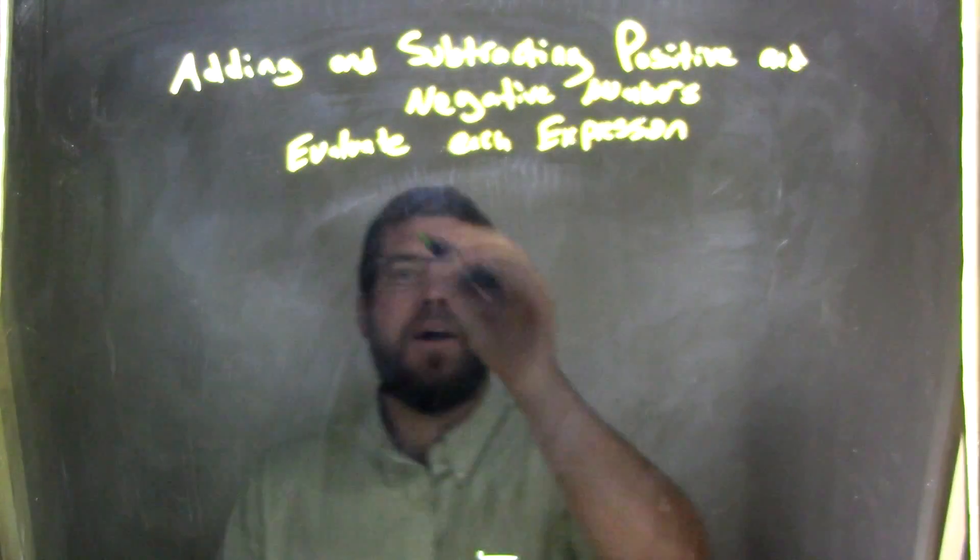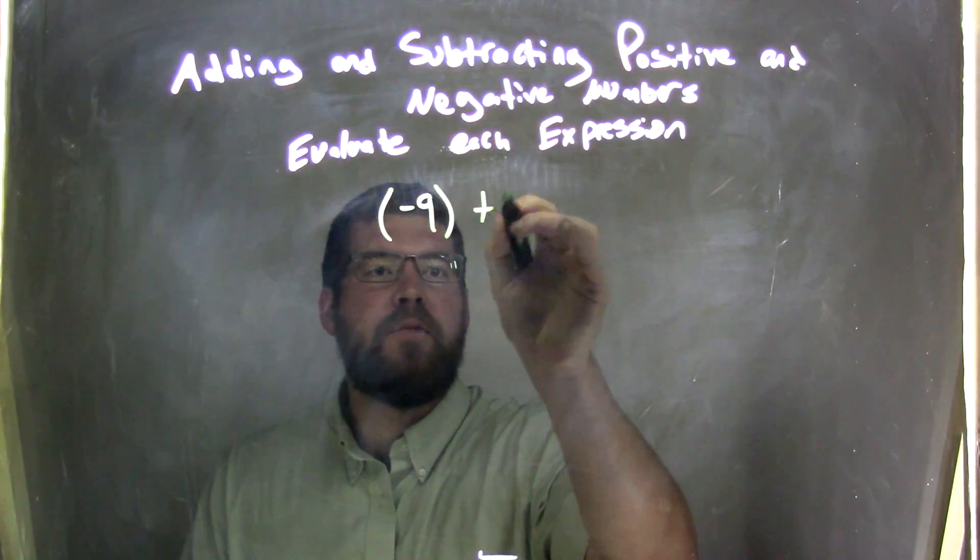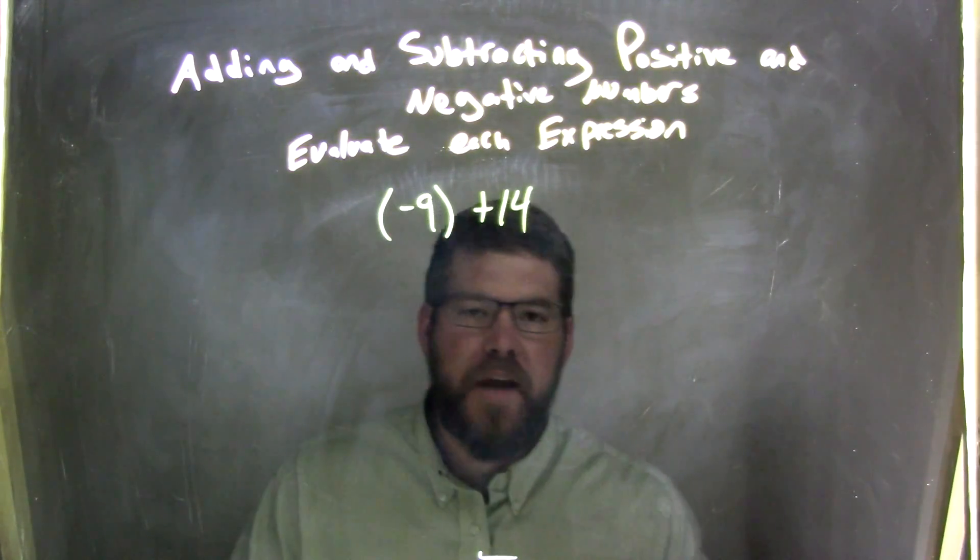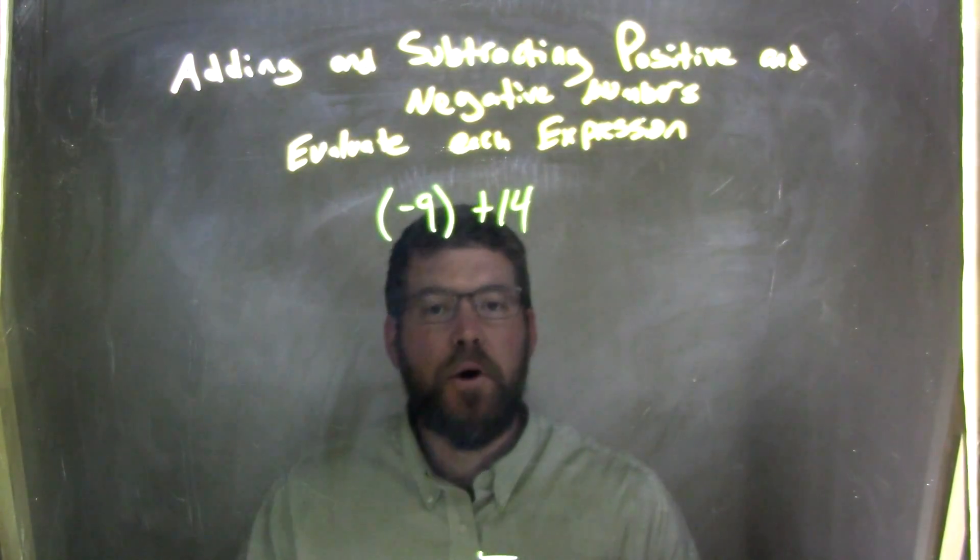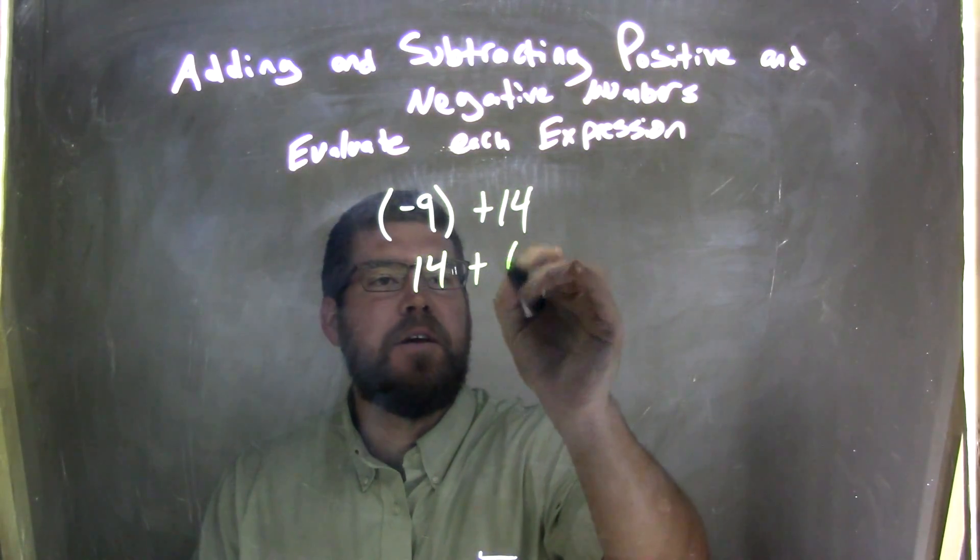So if I was given this expression, negative 9 plus 14. Well, if I have negative 9 plus 14, the commutative property states that I can rewrite that to be 14 plus a negative 9.